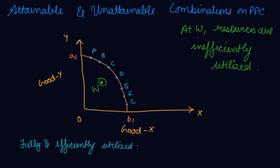So, can your combination be here somewhere? No. At Z, your resources will be fixed. This point will be produced only when your resources have increased. That is why I did the shifts in the PPC. But here your resources are over utilized.